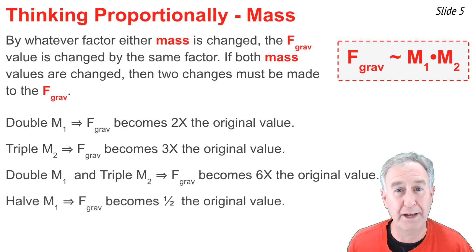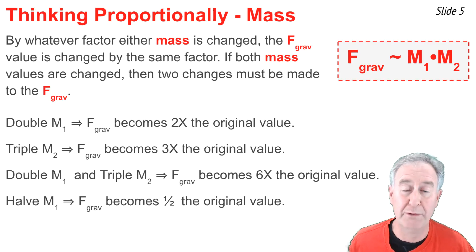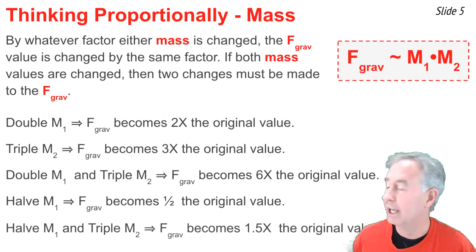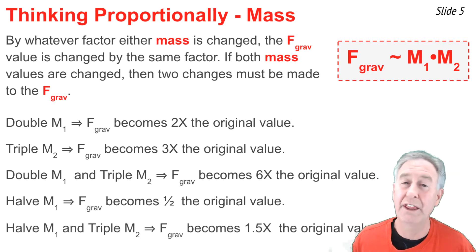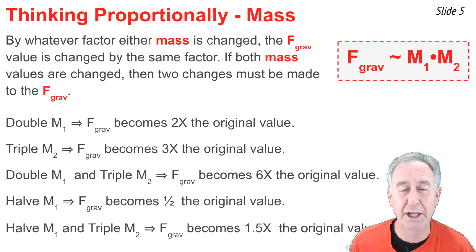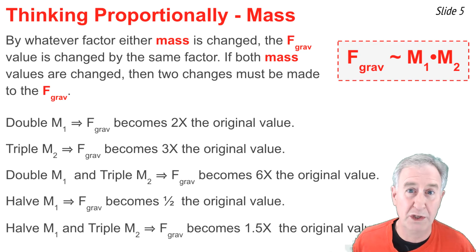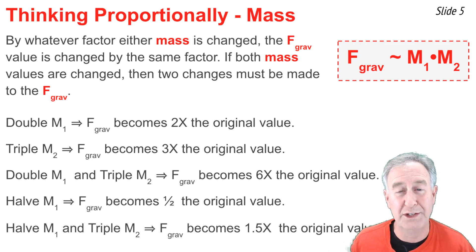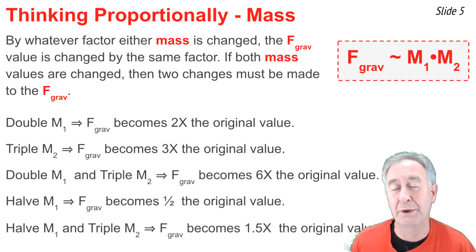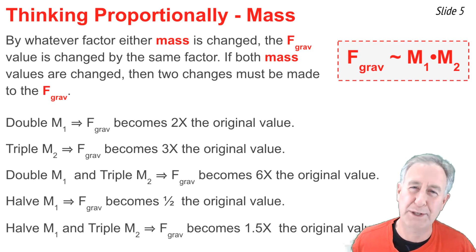If we were to half the M1 value, that would make F-grav one-half the original value. And if we were to both half the M1 value and triple the M2 value, two changes must be made to F-grav: we halve it because of the M1 change, and then triple it because of the M2 change. Put together, that makes the F-grav value three-halves, or 1.5 times, the original value.